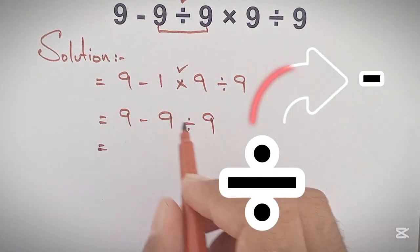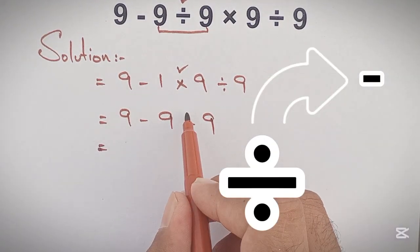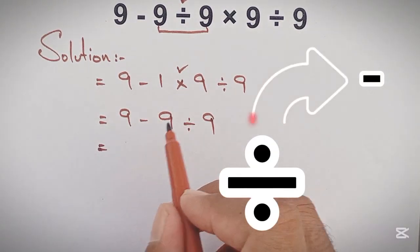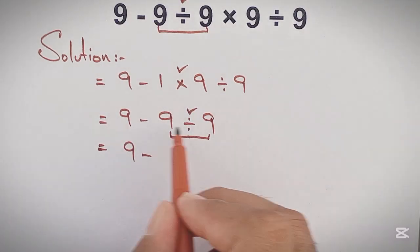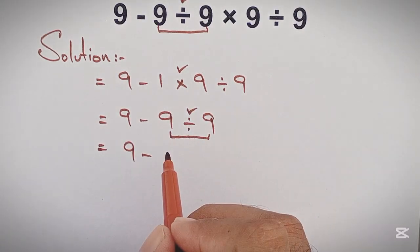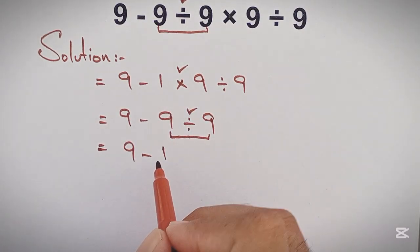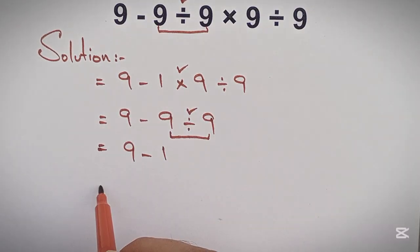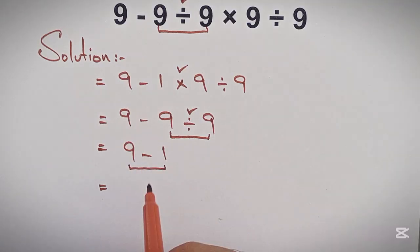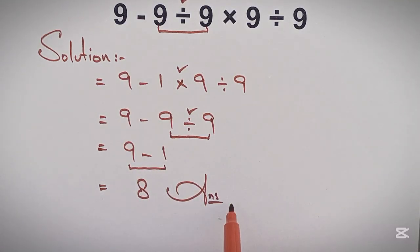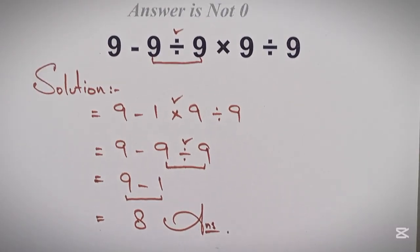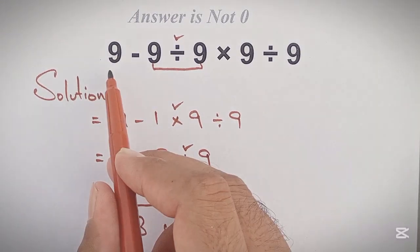Here division has higher priority than subtraction, so we do division first. 9 minus — here 9 divided by 9 equals 1. So we write 1. So here, 9 minus 1. Now 9 minus 1 is 8. Done. This is our final answer for this operation.